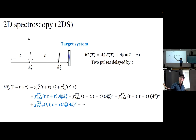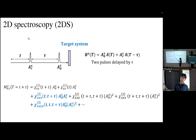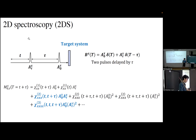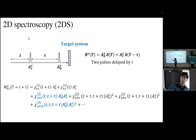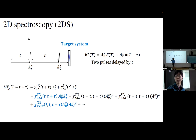In the 2D spectroscopy setup, you take a target system — here the 1D spin chain with fractionalized particles — and apply two separate magnetic pulses. You shoot the first magnetic pulse in the x-direction with field strength A0x, wait for a time delay tau, then apply a second pulse with strength A2x. After waiting a further time t, you measure the magnetization of the target system.